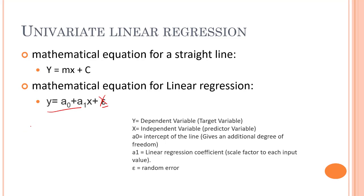We can also write this as f(x) equals a₀ plus a₁x. This is the dependent variable - it's a function of x. a₀ and a₁ are the coefficients. We can name a₀ as the intercept of the line, which gives an additional degree of freedom, and a₁ as the regression coefficient.